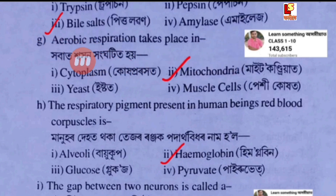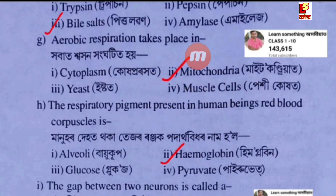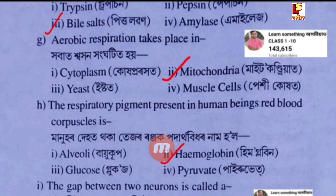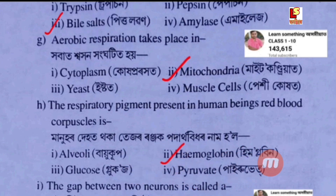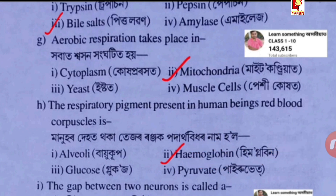Aerobic respiration takes place in — next question: the respiratory pigment present in human beings' red blood cells is hemoglobin. Option B: hemoglobin. Option C: glucose. This is an important previous year question.